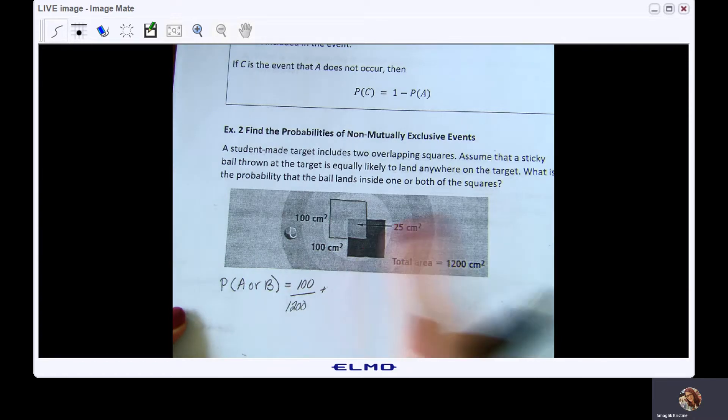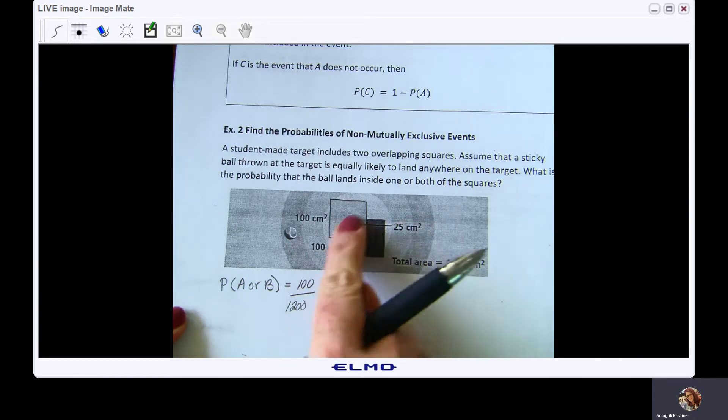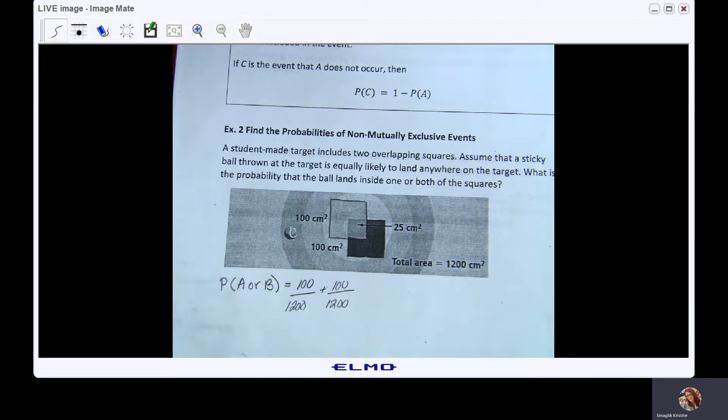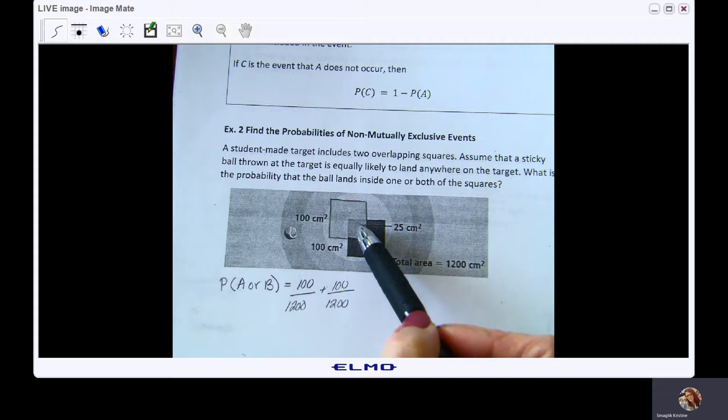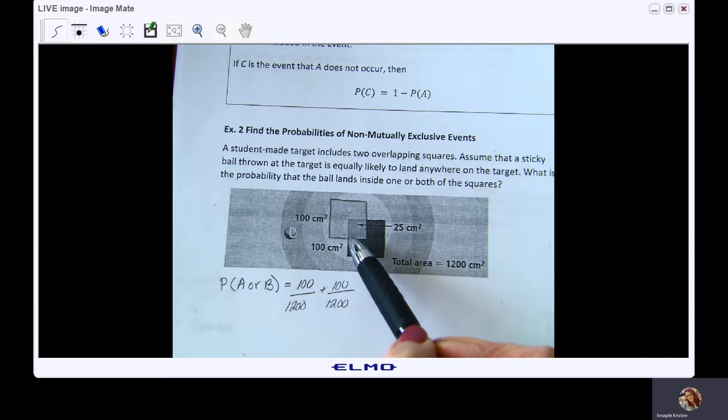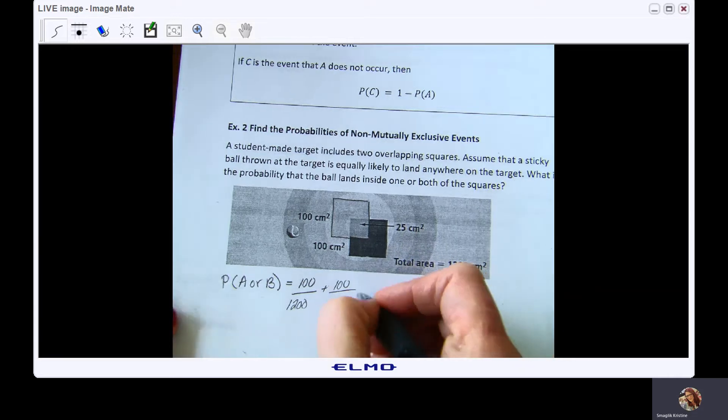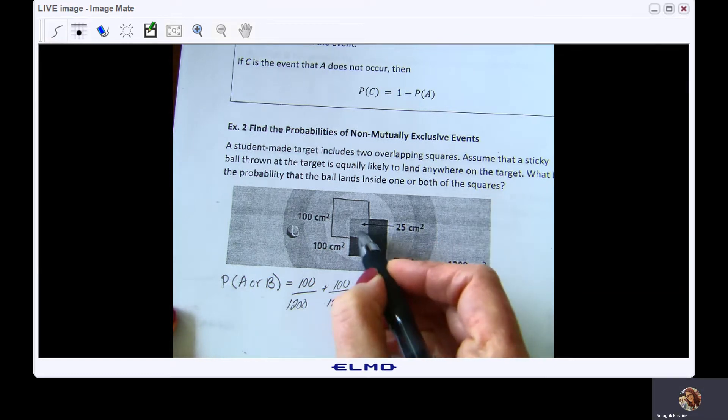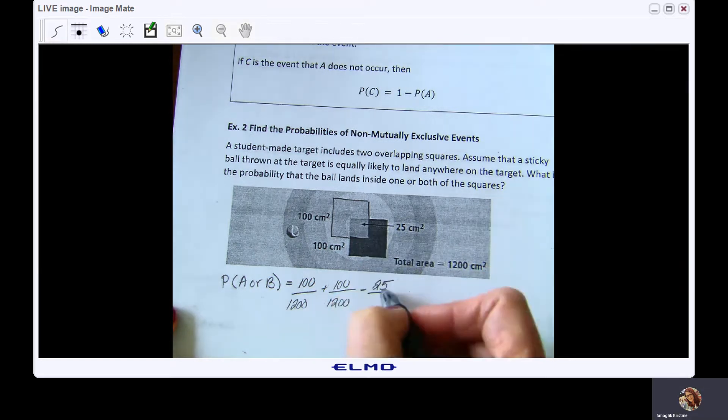And now event B, and that again is 100 centimeters squared over the total of 1200 centimeters squared. Now I got to be careful because if I do this, what's happened is I have counted the area here twice. So I need to remove it one time, so I'm going to subtract 25. My area of that overlap is 25 centimeters squared, so 25 over 1200.